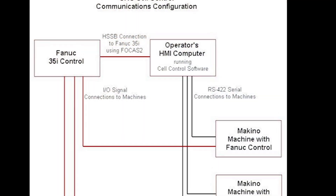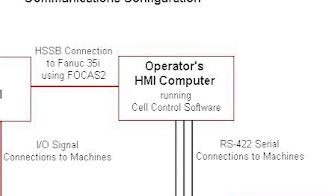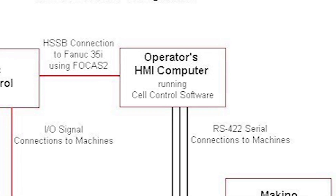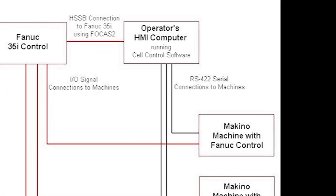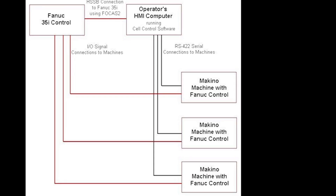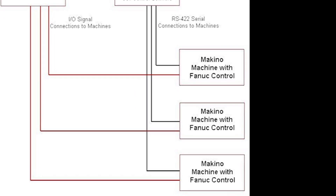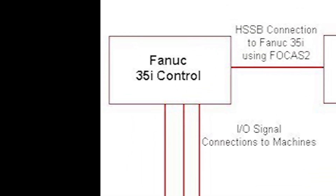Open Vision Cell Control software communicates with the FANUC CNCs on the Makino machines via RS422 serial connections, and receives requests from machines to load and unload pallets, provides information to the machines about the pallet being loaded, and receives information about the machine pallet from the machines. The FANUC 35IB motion controller also communicates with the FANUC CNCs on the Makino machines via I/O signals.